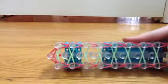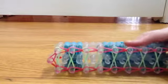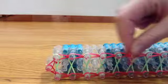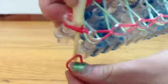So now you're just going to finish it. You're just going to take a single band that's your border color. You're going to go through all of these, put this band on there and pull it through.